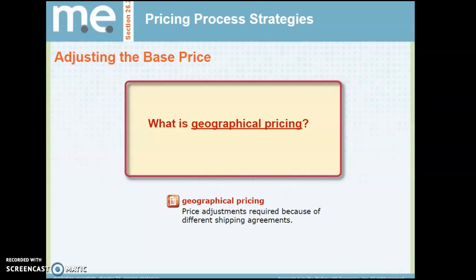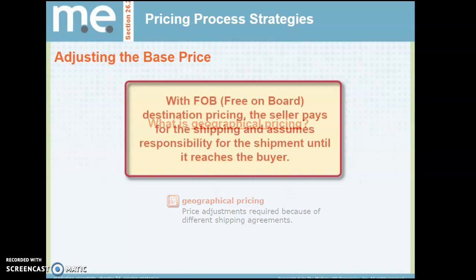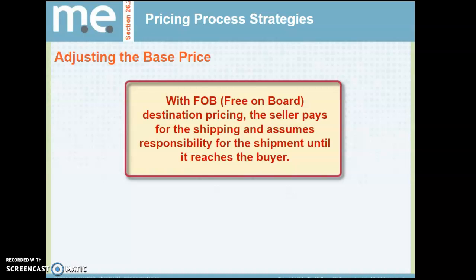Geographical pricing means price adjustments are required because of different shipping arrangements based on location. Free on board (FOB) destination pricing is when the seller pays for the shipping and assumes responsibility for the shipment until it reaches the buyer — meaning if I sell something to you, I pay for the shipping and include that in the price.